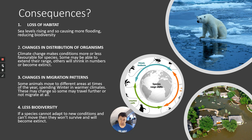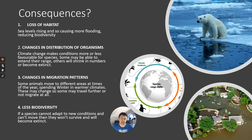Second, changes in distribution of organisms — where you find different species. Climate change may benefit some species in certain areas due to warmer, wetter, or drier conditions, but many species won't be able to extend their range and will shrink in numbers, potentially becoming extinct and affecting food chains and food webs. Third, changes in migration patterns — for example, swallows spending winter in warmer climates may have to travel further, increasing death rates, or some may not migrate at all, affecting indigenous species already living in a particular area.